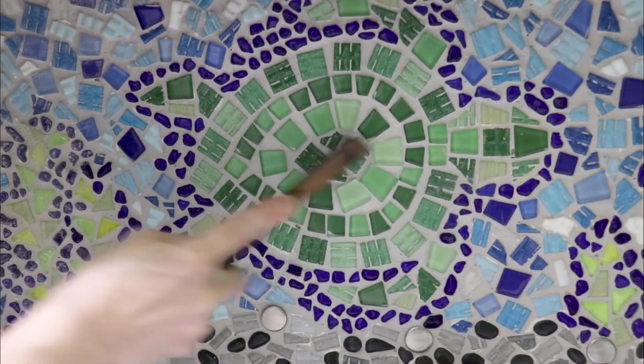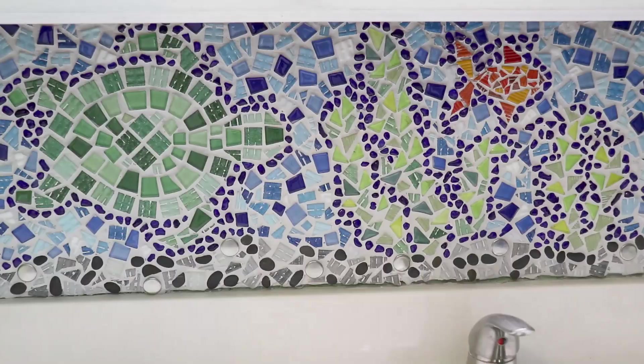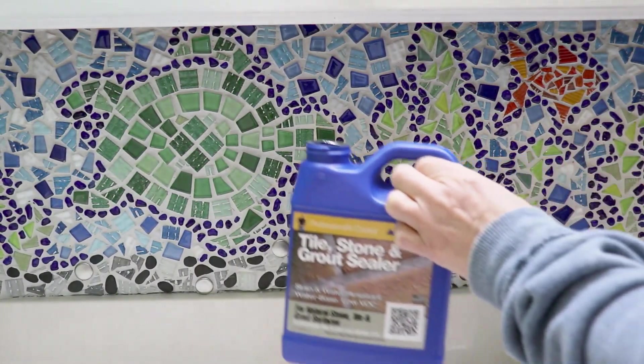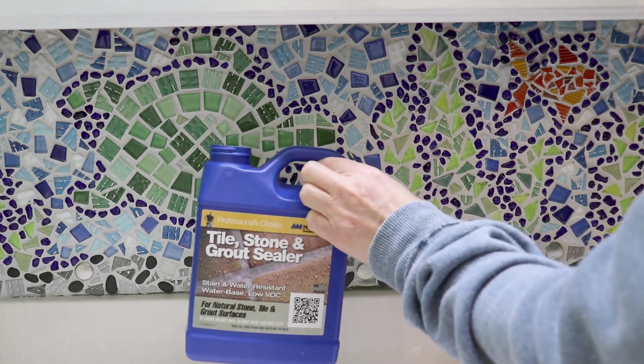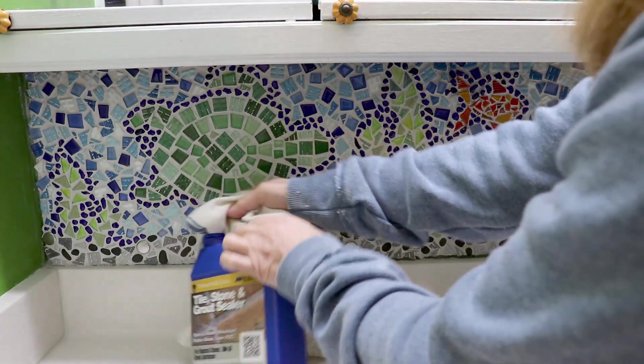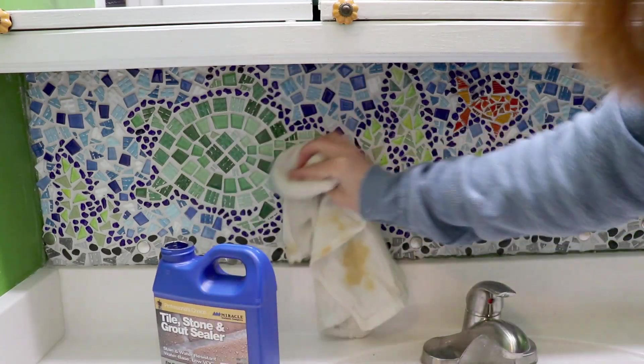After scrubbing that mosaic thoroughly, let it dry for a day or two. The last step in the process is to apply a grout sealer. Just use a towel to wipe it all over the surface. It's going to protect your grout. It should dry for about three days before you touch the tile again.